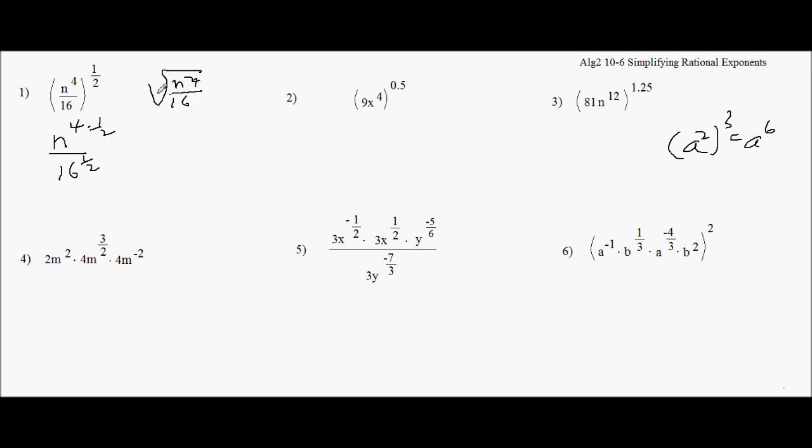And I can just split the radical like this. And so I can multiply the four times a half, so it would be n squared, and this is square root of 16, which is four. And that's it. That's all I have to do.